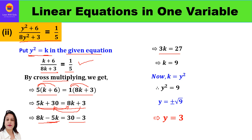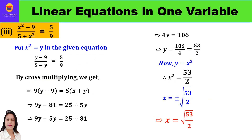So k = 27/3 = 9. Since k was y², we have y² = 9, so y = ±3. Since the question asks for only the positive value, y = 3. Now let's move to the third question: (x² - 9) / (5 + x²) = 5/9.